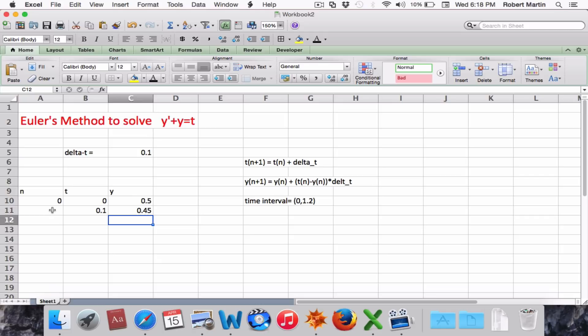Okay, so now let's fill down the columns. For our iteration number, we're going to solve the equation on the time interval 0 to 1.2, which with a separation of 0.1 means that we will do 12 iterations. So I'll pull n down to 12. Right there.